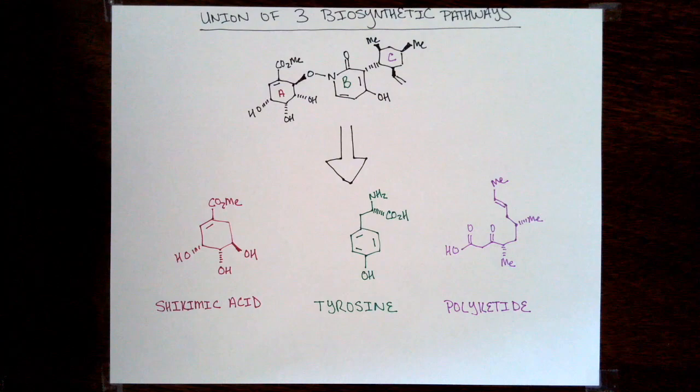Based on some feeding studies, the researchers were able to explore the biosynthetic pathway, mainly the way that these three pathways join to ultimately generate maximiscin. They discovered likely that the eastern fragment comes together first and then ultimately through N-O bond scission, they form the western fragment onto the eastern fragment.